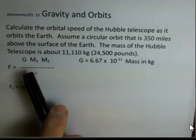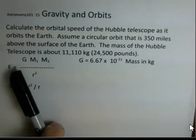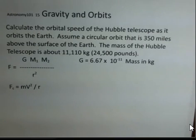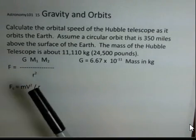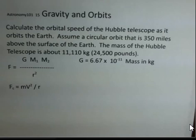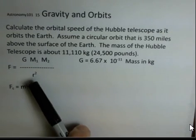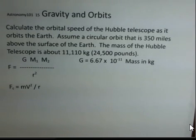We have the force of gravity given to us by Newton. G, capital G, is the constant of gravitation. M1 and M2 are the two masses that are attracting each other. And R squared in the denominator, R is the distance from the center of one object to the center of the other object.